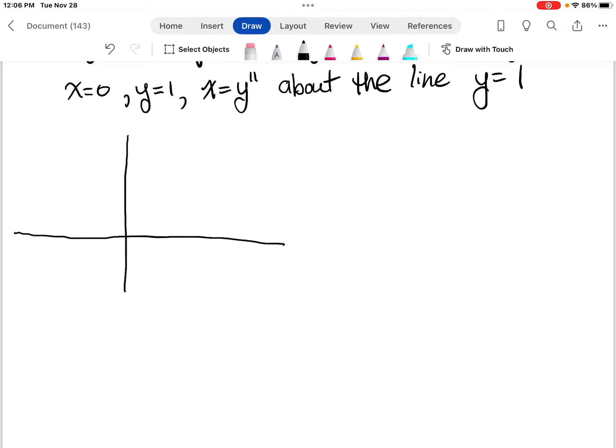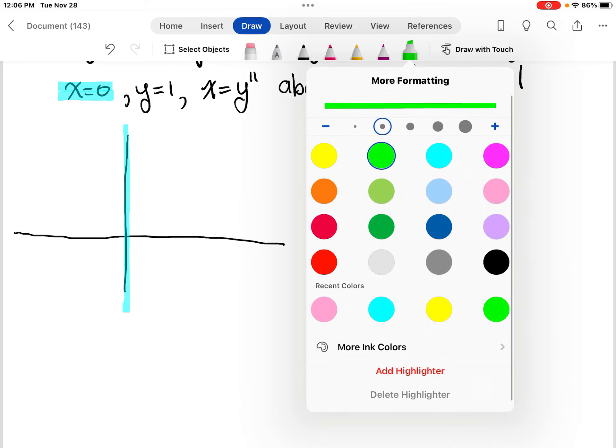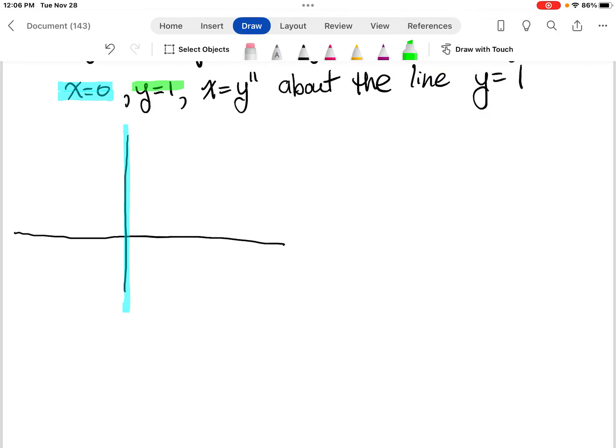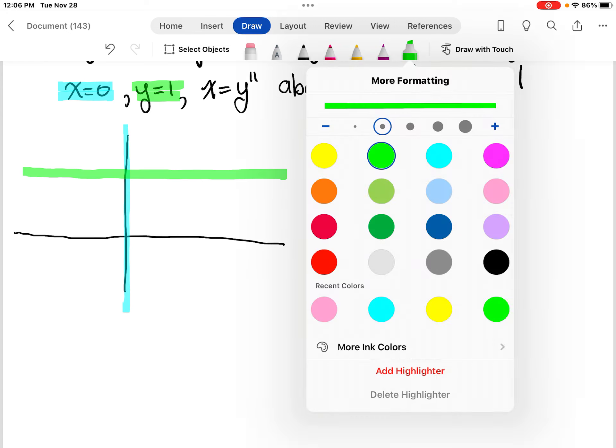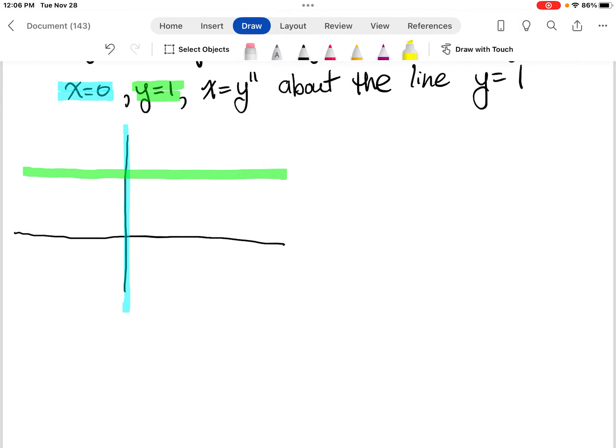So here is a rough sketch of what we're looking at. x equals 0 is this line right here. y equals 1 would be this,